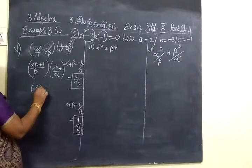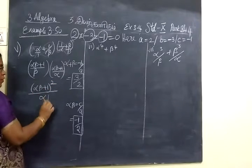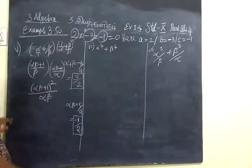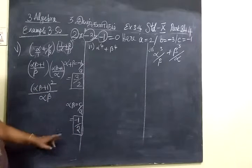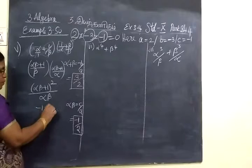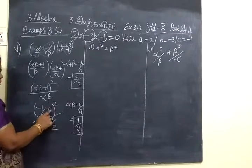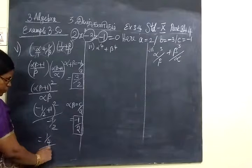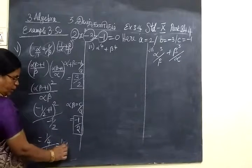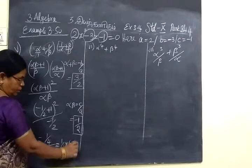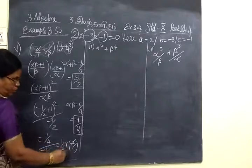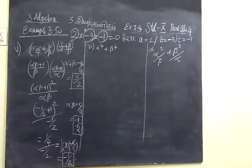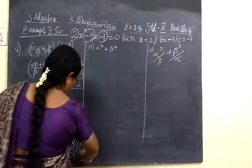The expression becomes (alpha beta plus 1) whole square divided by alpha into alpha beta — that is, (A plus B) whole square form. Now substitute alpha beta, which is minus 1 by 2. So (minus 1/2 plus 1) whole square divided by minus 1/2. That gives (1/2) whole square divided by minus 1/2, which is 1/4 divided by minus 1/2. Writing in reciprocal form: 1/4 times minus 2, giving minus 1 by 2. The answer is minus 1 by 2, which is correct.